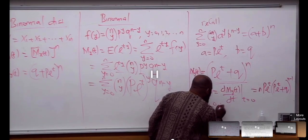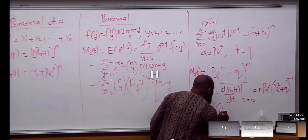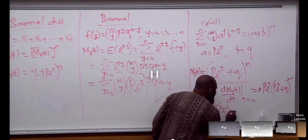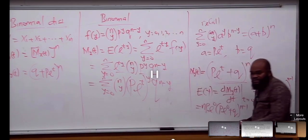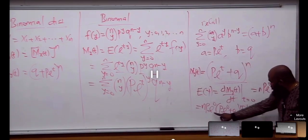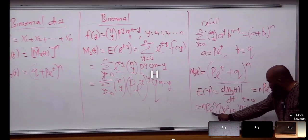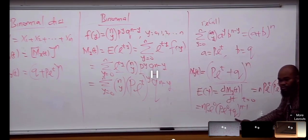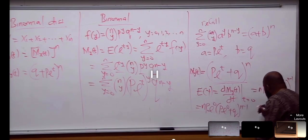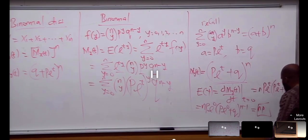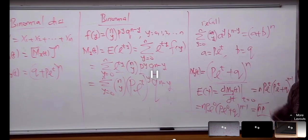When you set it to 0, you're going to have this guy plus q raised to power that. What does that mean? There's going to be 1 — p plus q equals 1. What do we have? np. We have derived the mean of binomial distribution from the moment generating function.